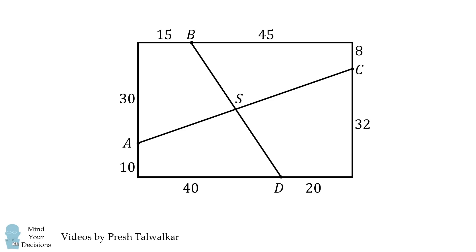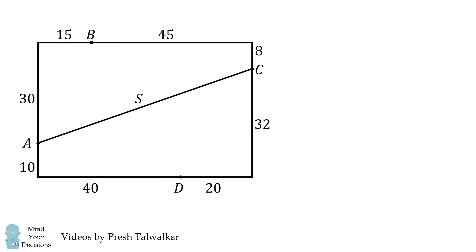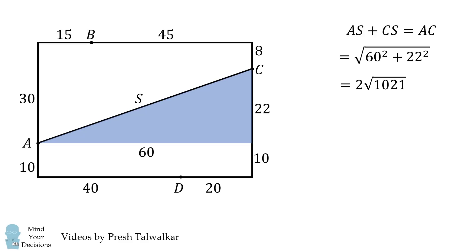We'll do that by using right triangles. First, let's calculate the length of AC. We have one right triangle here. One leg will be equal to 22, and the other leg will be equal to 60. Therefore, we can calculate the length of the hypotenuse using the Pythagorean theorem, and we get 2√1021. This will be equal to AS + CS.